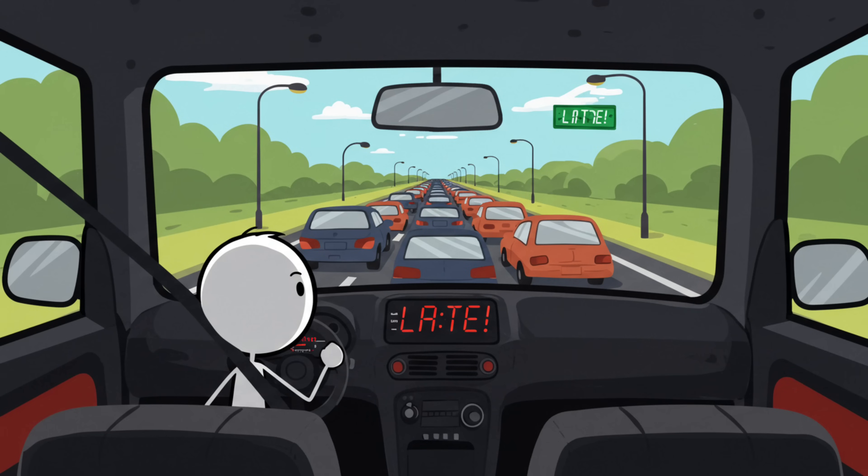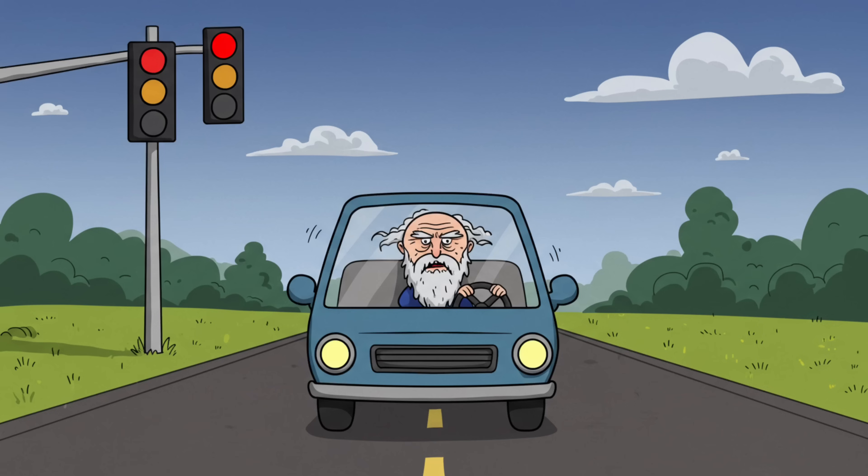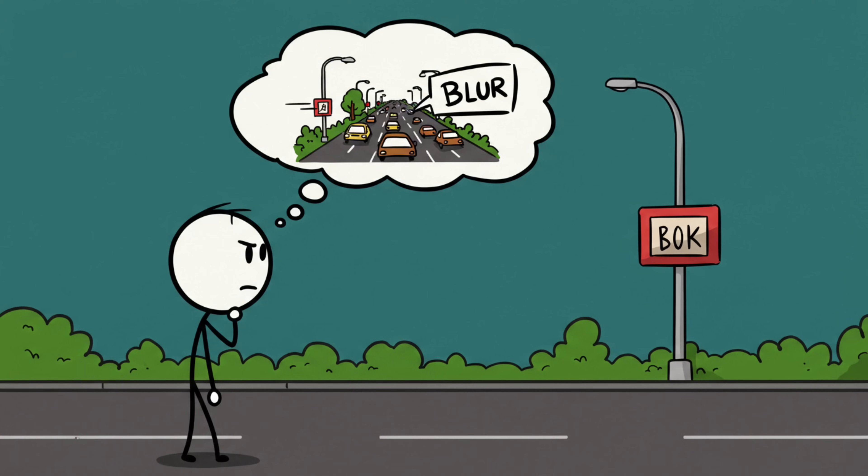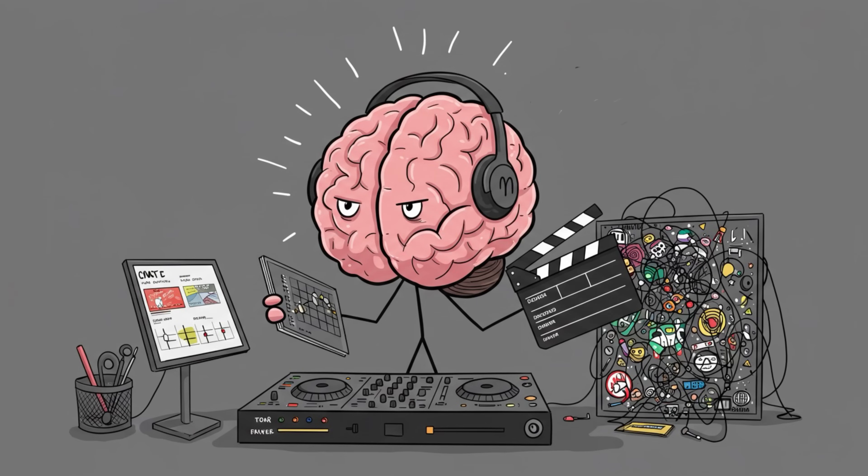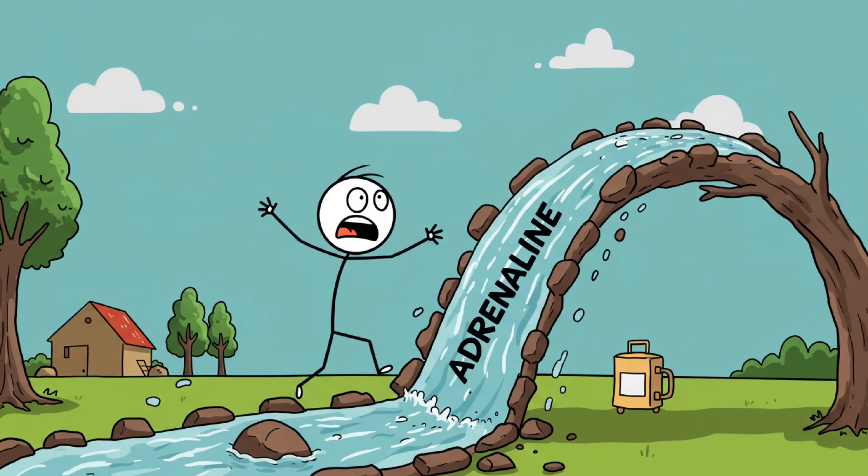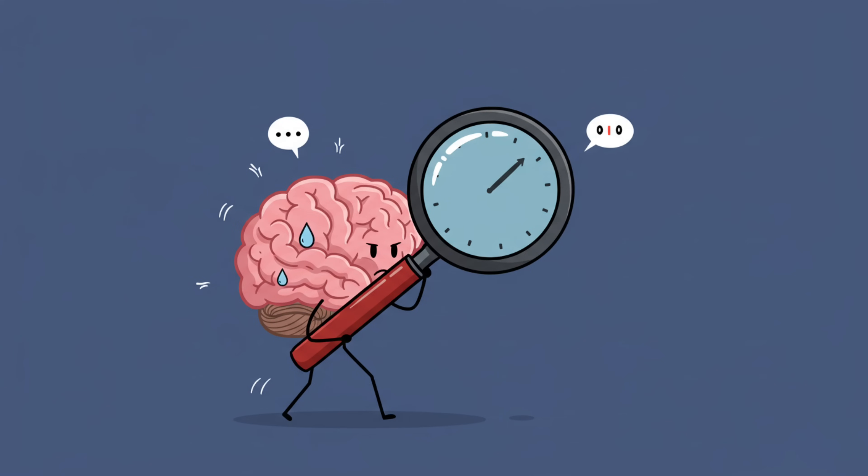Picture being stuck in traffic when you're already late. Every second feels like 10. You swear you've aged a decade by the time the light turns green. But then later, when you look back, the whole ordeal feels shorter than it did in the moment. Stress basically stretches time when you're in it and compresses it when you look back. It's like your brain is both a terrible DJ and a bad film editor, remixing the experience into something that makes no chronological sense.